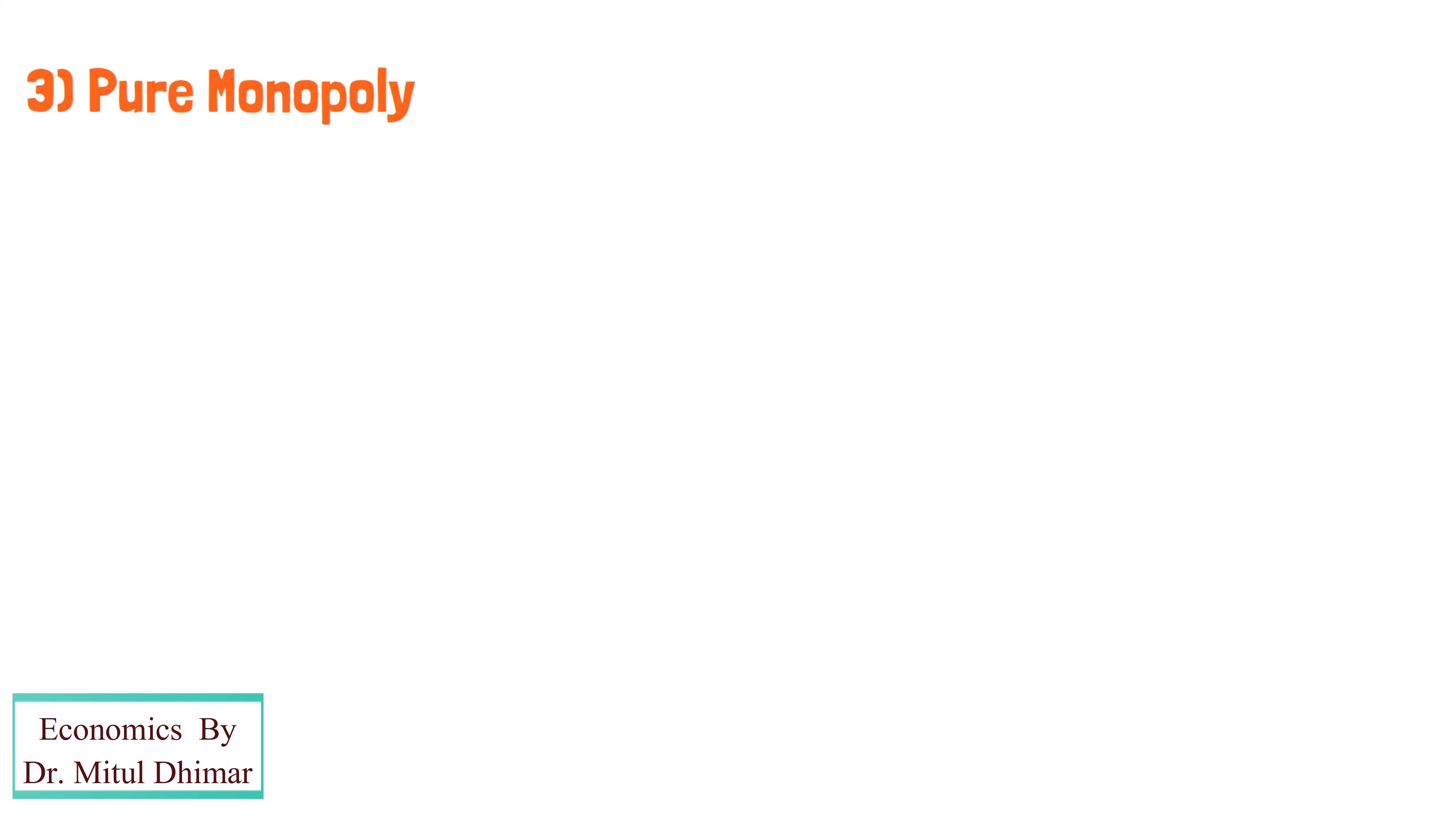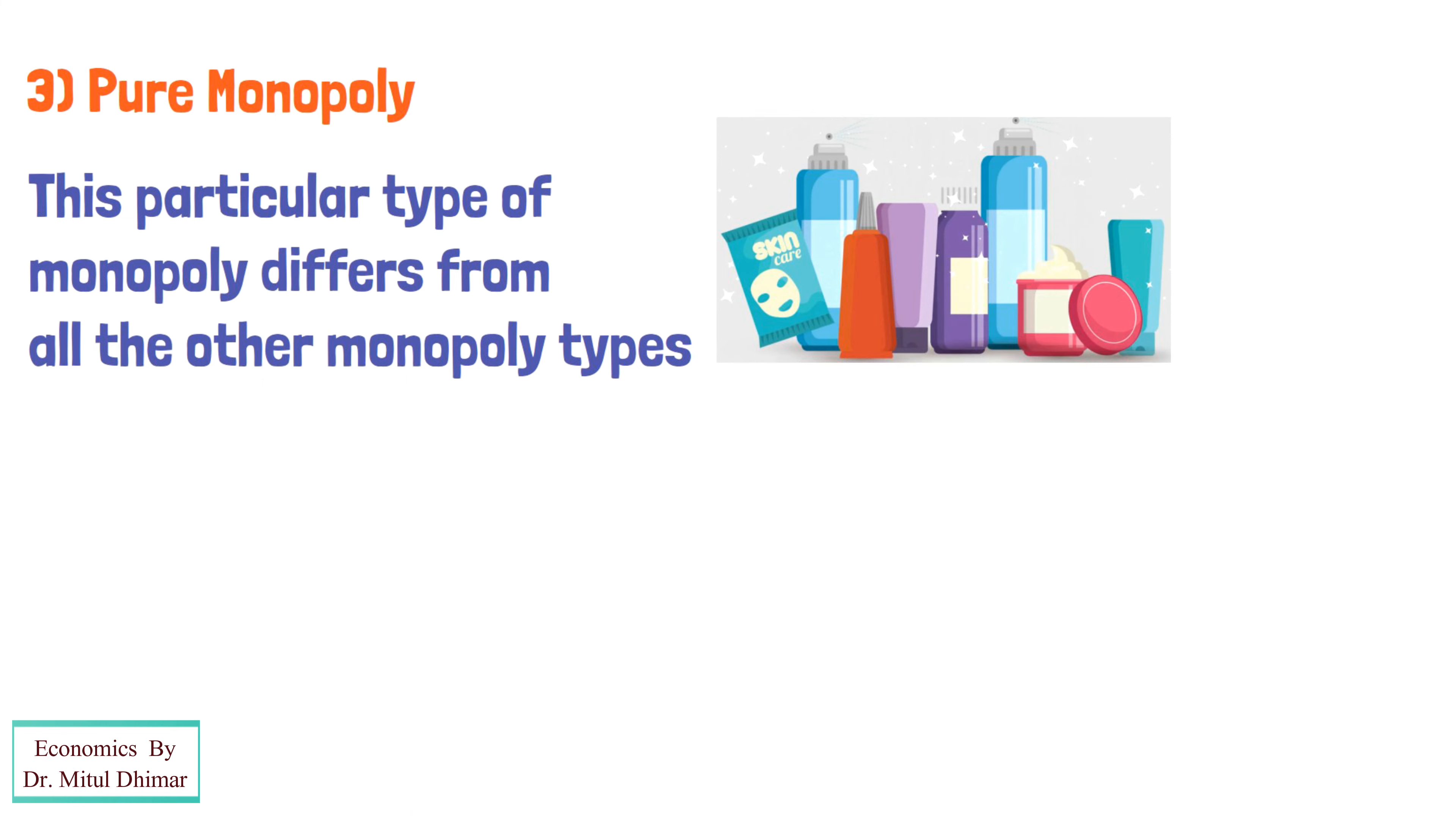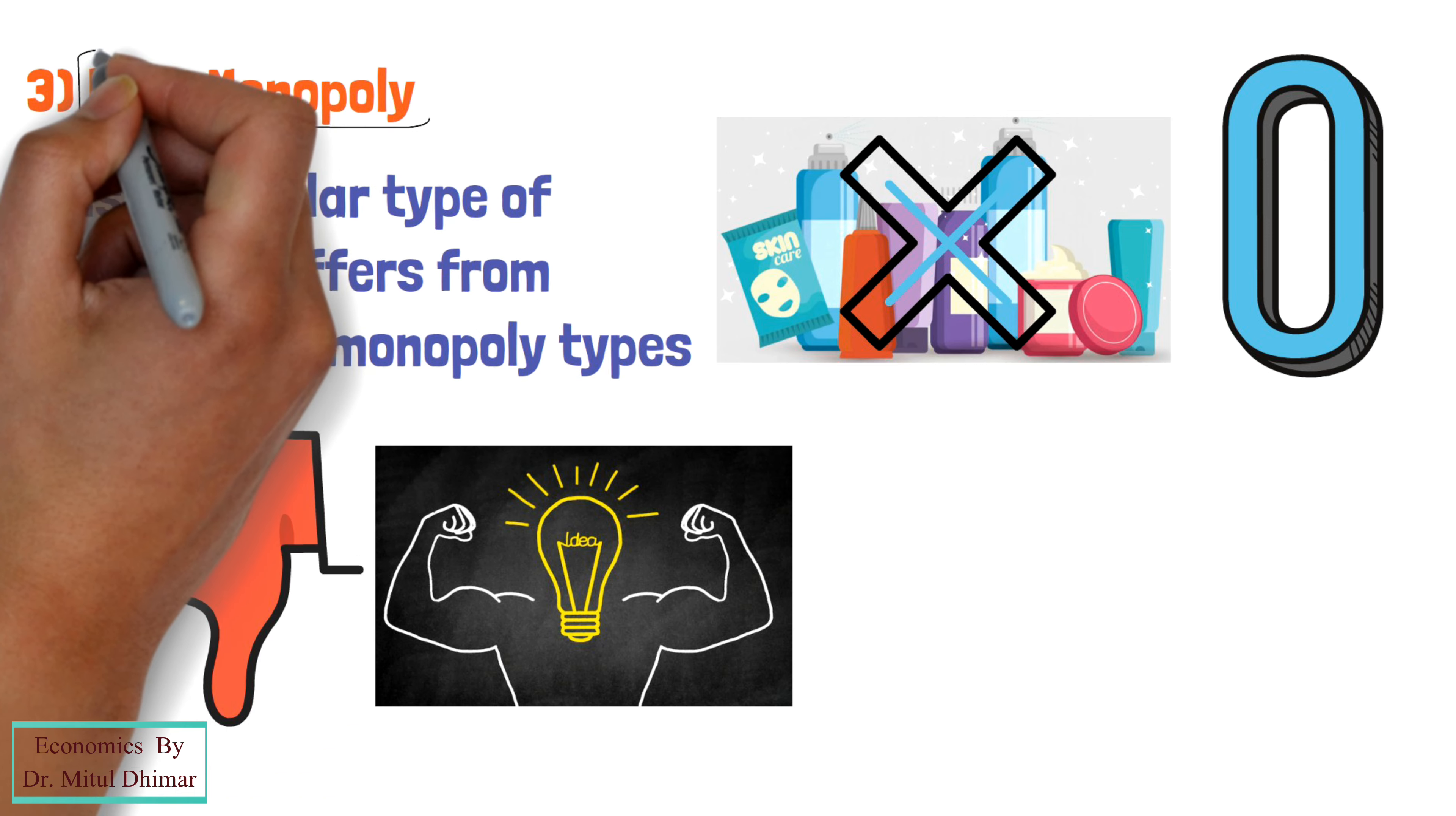3. Pure monopoly. This particular type of monopoly differs from all the other monopoly types because the substitutes available for the product in pure monopoly is zero. This means that pure monopolies do not even have a remote substitute. Therefore, the power centered around a pure monopoly is immense.